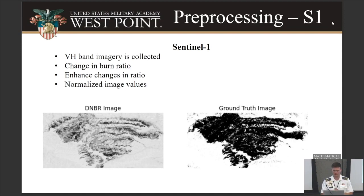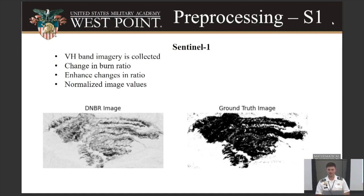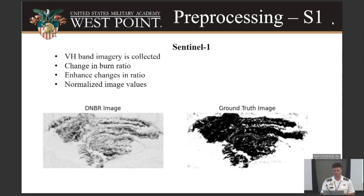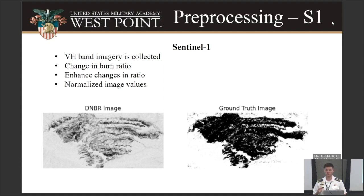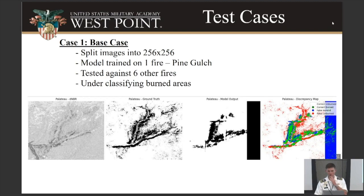Sentinel-1 looked a little different — we take the VH band, which is the vertical-horizontal band of the SAR imagery, and calculate the change in burn ratio. We then enhance these ratios to widen the differences and normalize both Sentinel-1 and Sentinel-2 to compare those values. You can see on the left the ratio image, and then you have the ground truth, which is calculated by thresholding the Sentinel-2 image.